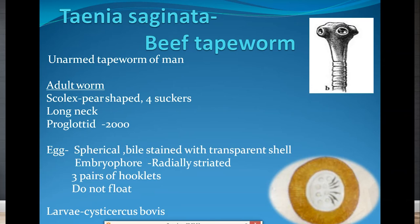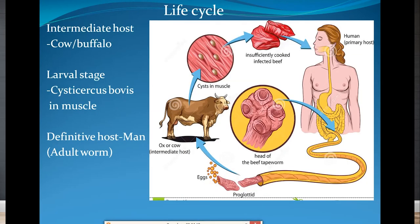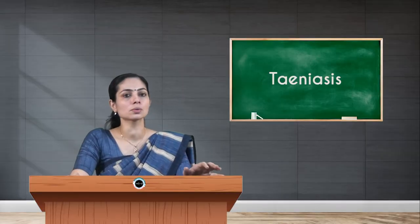The egg stage cannot be differentiated from Taenia solium eggs. It will have a spherical, bile-stained egg with a transparent shell. The embryo will be radially striated, carrying three pairs of hooklets, which we can identify during stool examination. The eggs do not float in saturated salt solution. The third stage is known as Cysticercus bovis, which is the larval stage found in the intermediate host — the cow or buffalo.